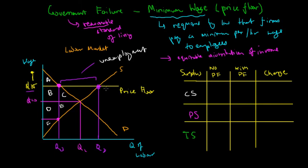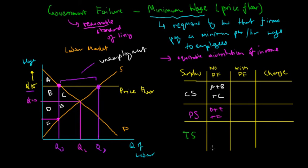Before the minimum wage is introduced, the consumer surplus — representing firms — is A plus B plus C, which represents how much firms are willing to pay for labor above the market wage. The producer surplus — the people offering their labor — is D plus E plus F. Therefore, the total surplus in the economy is A plus B plus C plus D plus E plus F.